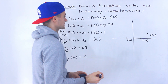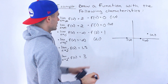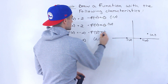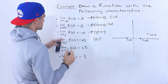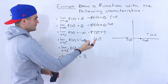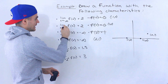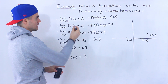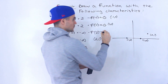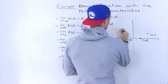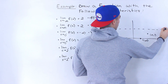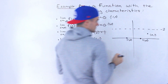Now let's go through the limit characteristics. As x approaches negative infinity and as x approaches positive infinity, the function goes towards a y-value of two, so we know there's going to be a horizontal asymptote at y = 2.